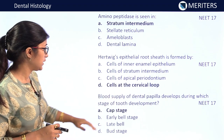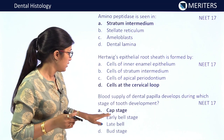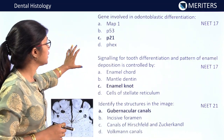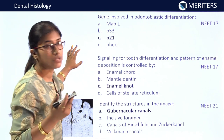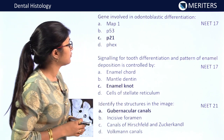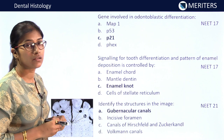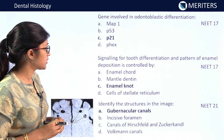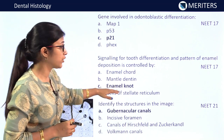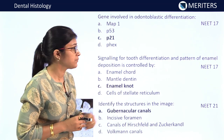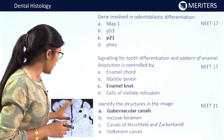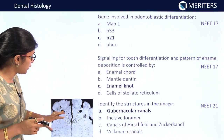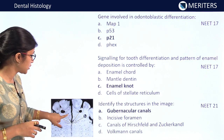Blood supply of the dental papilla develops during which stage? Cap stage — appeared in NEET 2017. A gene-based question: the gene involved in odontoblastic differentiation is p21 — NEET 2017. Signaling for tooth differentiation and pattern of enamel deposition is controlled by enamel knot — NEET 2017. An IBQ appeared in recent NEET 2021 where a structure had to be identified from an image — the answer was gubernacular canals.